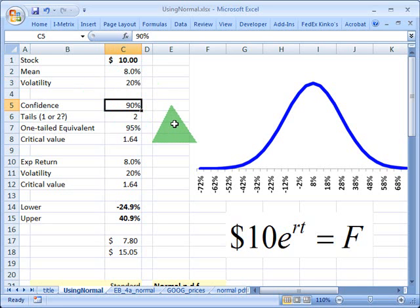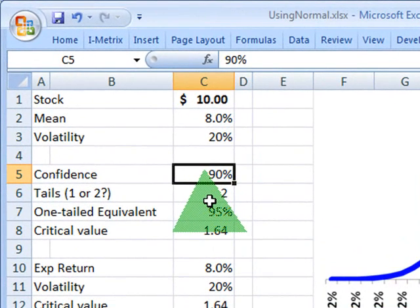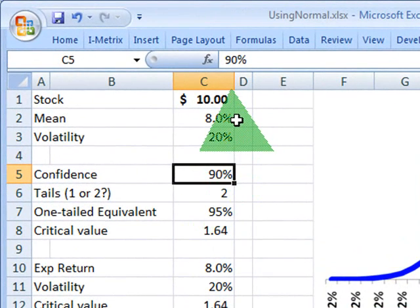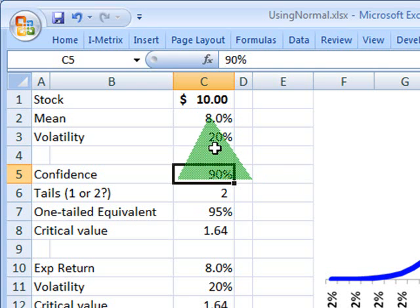The decision I need to make is about the confidence. What kind of confidence do I want to have about the future stock at the end of the one year period where I have an expected return of 8% but a volatility of 20%? I'm going to select 90% as the confidence interval.